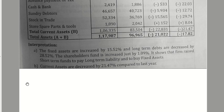Interpretation: compare fixed assets, long-term debts, and shareholders' funds — the percentage increases should be aligned. Fixed assets increased by about 15%, but long-term debts decreased and shareholders' funds increased by only about 1%. This shows short-term funds were raised to buy fixed assets. Current assets decreased by 21.47% compared to last year. You should always compare current assets and current liabilities percentage changes, and verify whether long-term debts and shareholders' funds were used to buy fixed assets. Thank you everyone.